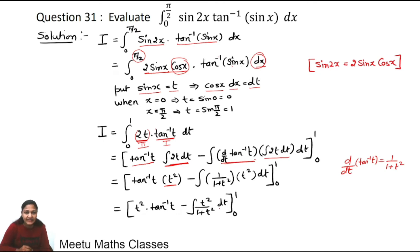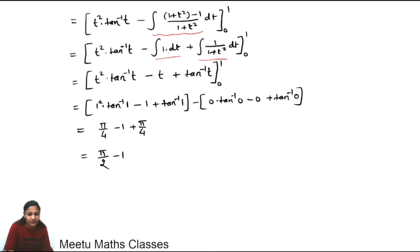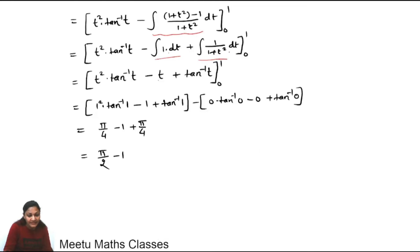This function t²/(1+t²) can be integrated by adding and subtracting 1 in the numerator. So we write it as (1 + t² − 1)/(1 + t²), which splits into two integrals: (1+t²)/(1+t²) = 1, and −1/(1+t²). The integral of 1 is t, and the integral of 1/(1+t²) is tan⁻¹(t).